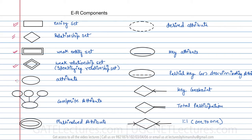This is how you represent an attribute. This represents a composite attribute, and this represents a multivalued attribute. This represents a derived attribute, key attribute, partial key, and key constraint. Here in the key constraint, you can see the sign.